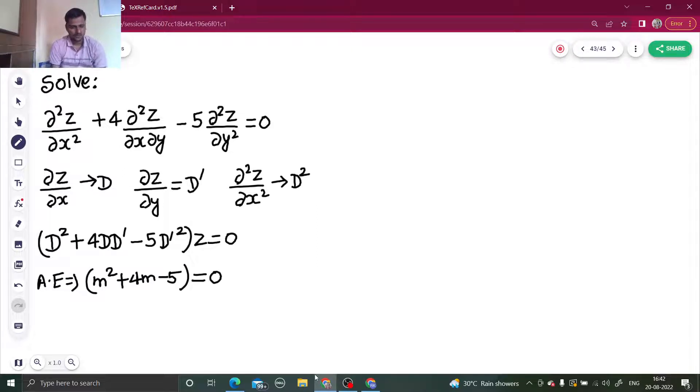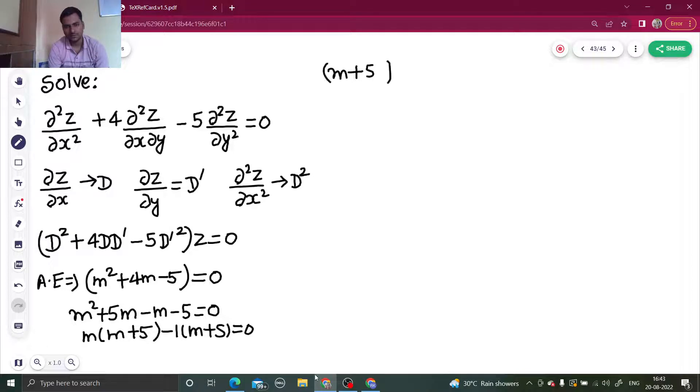Equate it to 0. So from here, m² + 5m - m - 5 = 0. If you take m common, it will be m + 5 times m - 1 equals 0. So you are getting m + 5 and m - 1 equal to 0. Now from here you can write your m₁ as -5 and your m₂ as 1.